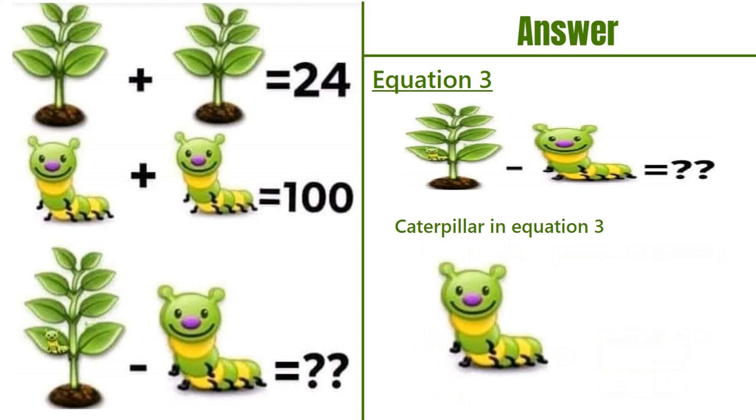Now, if you see the caterpillar in equation number 3, if you look closely there are 2 caterpillars. So 2 caterpillars equals 2 times 50, which equals 100.